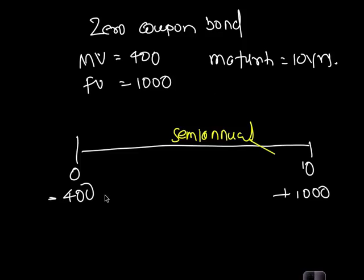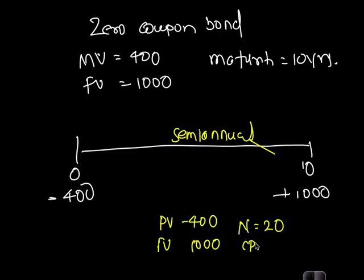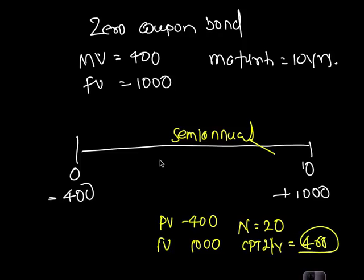Assuming semi-annual compounding, set your calculator: PV = -400, FV = 1000, N = 20, then compute I/Y — which gives approximately 4.68. Your YTM would then be 4.68 multiplied by 2.